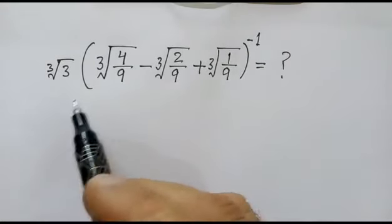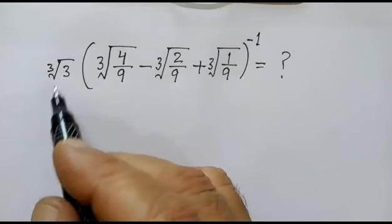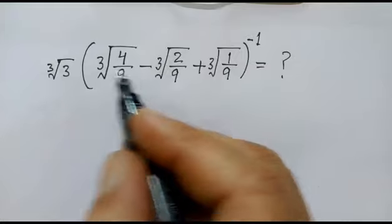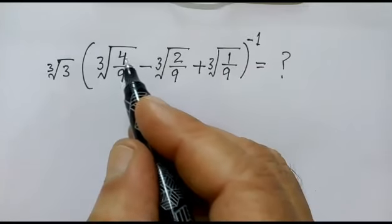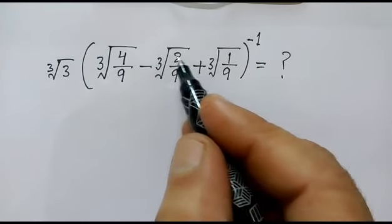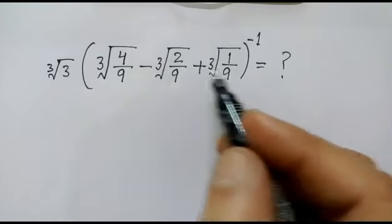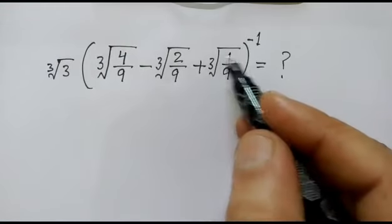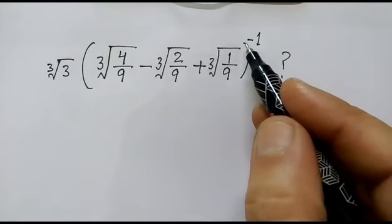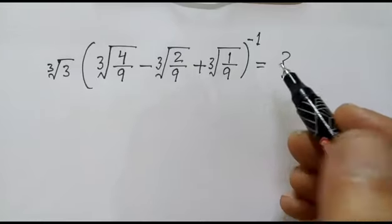Today we have a nice problem: cube root of 3 multiplied by cube root of 4 over 9, minus cube root of 2 over 9, plus cube root of 1 over 9, whole power minus 1. What is this equal to?